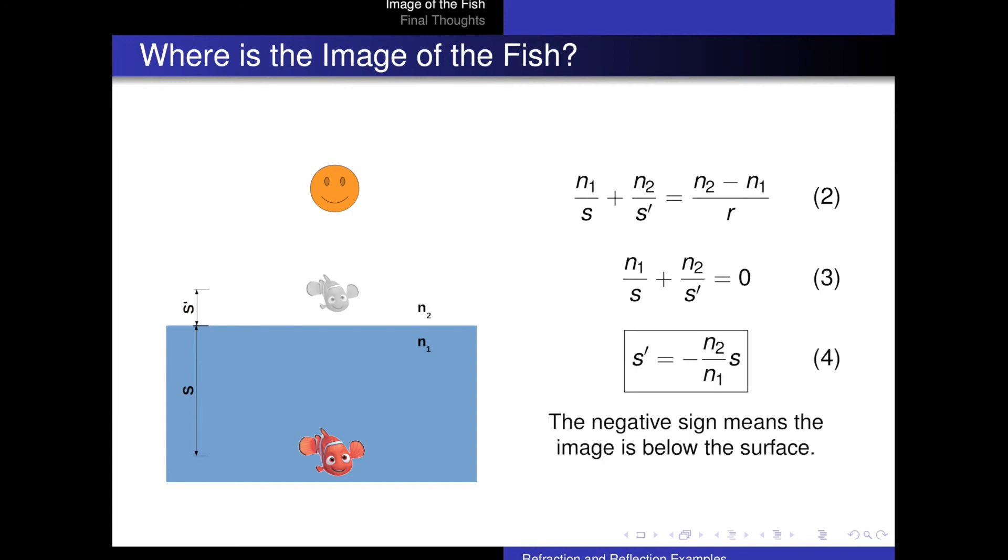Then I'm just going to do some rearranging and I get s prime is equal to minus n2 over n1 times s. So remember, the negative sign means that the image is below the surface. And that's exactly what we see in real life.